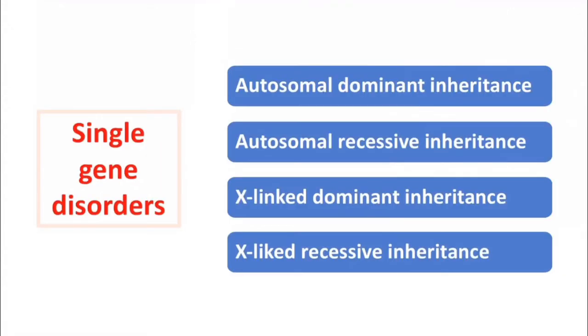Single gene disorder also comprises a certain spectrum of disorder. We have autosomes and sex chromosomes. We have genes of dominant character and of recessive character. Considering this, single gene disorders can be classified into these four categories: autosomal dominant, autosomal recessive, X-linked dominant, and X-linked recessive. We will discuss one by one.